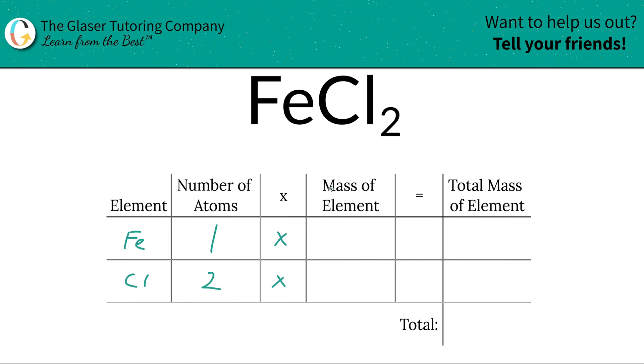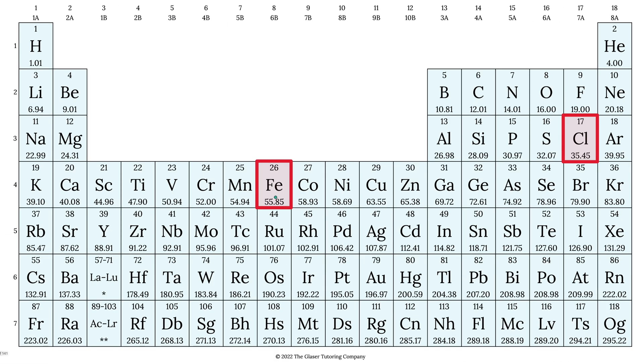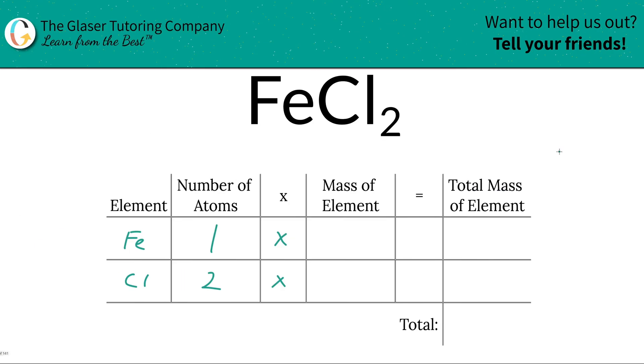Next we're going to multiply it by the mass of the element. These masses are found on the periodic table. Let's take a look. Iron's mass is 55.85 and chlorine is 35.45. So we're going to write those in. So 55.85 for iron, and then chlorine is 35.45.